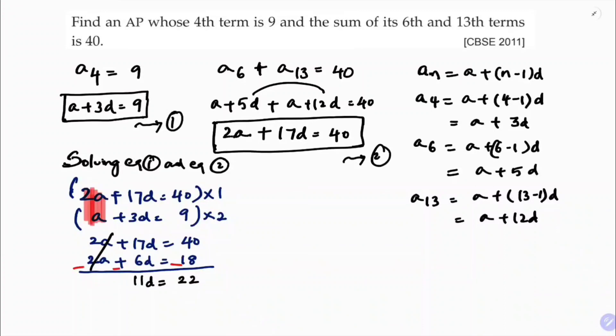So here you will get D equals, D equals 22 upon 11. So the value of D is 2.